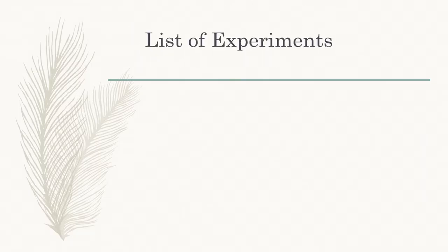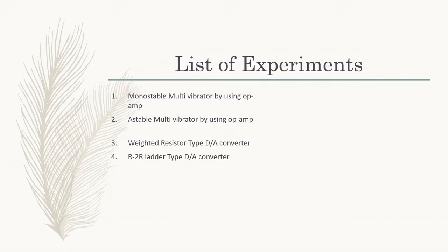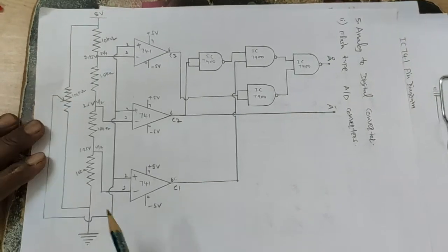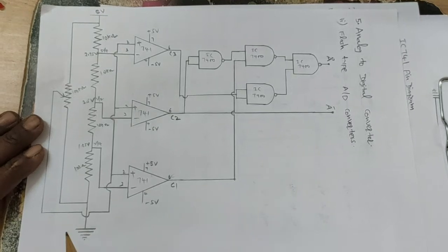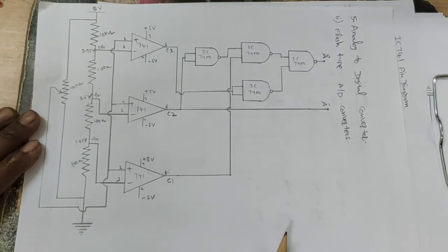Following are the list of experiments. The fifth experiment is Design and Verification of Flash Type A2D Converter. This is the circuit diagram for Analog to Digital Converter.